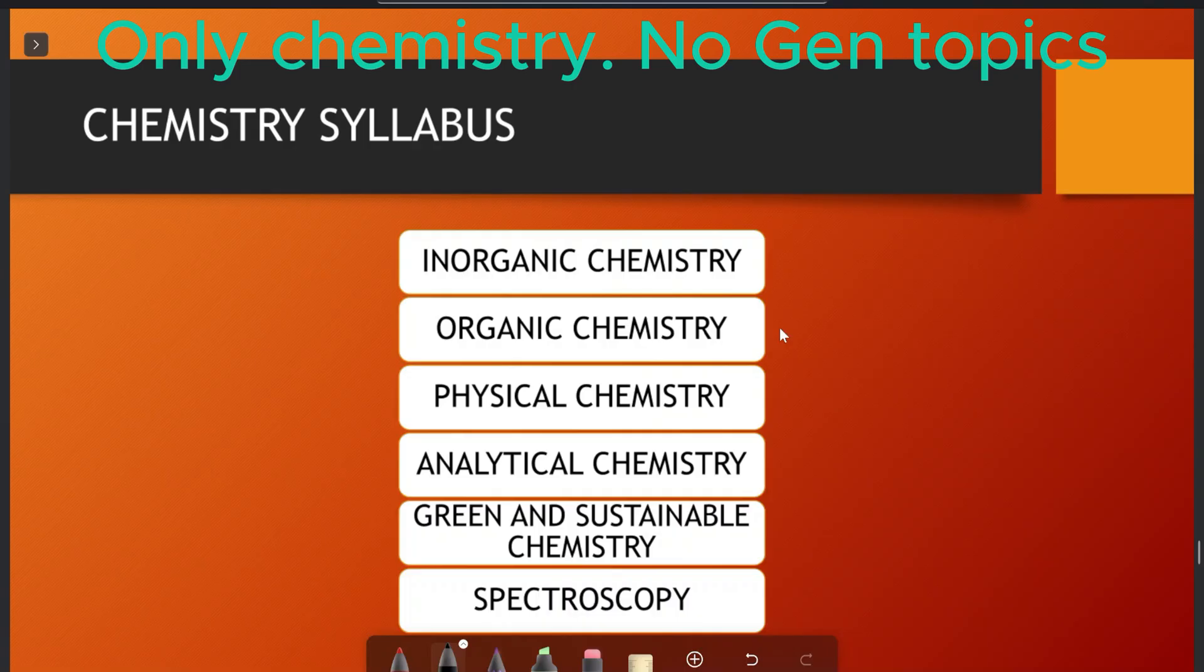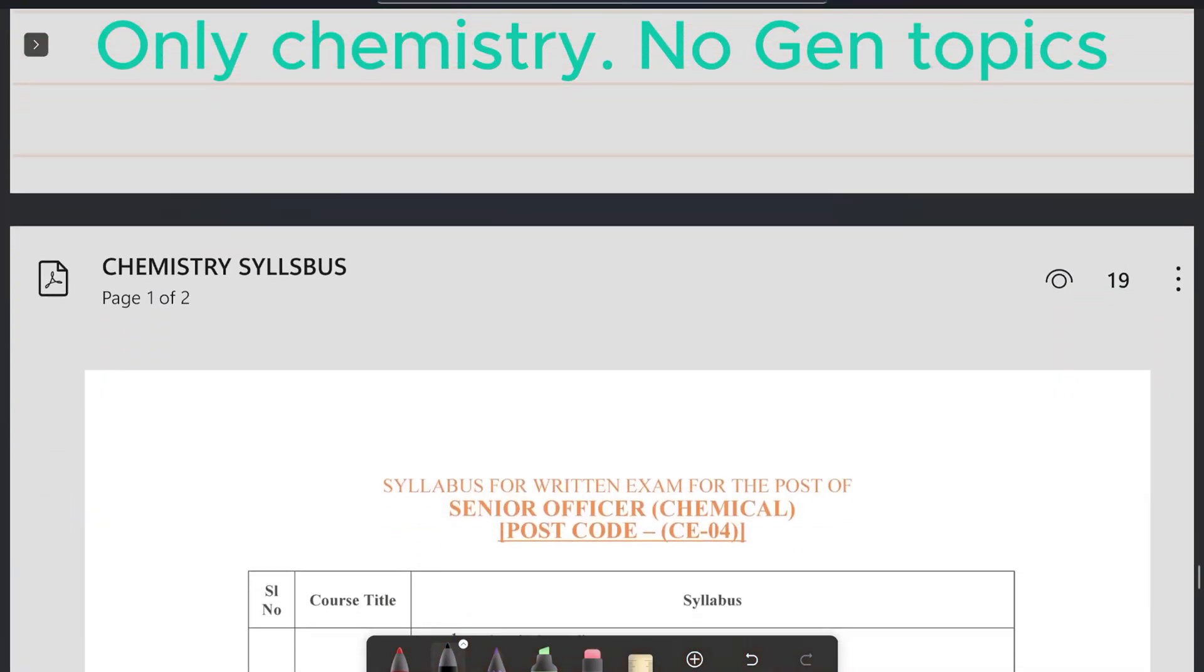Let me tell you about the authentic syllabus. Let's discuss the syllabus in brief, what are the important topics that you have to focus on. Inorganic chemistry, organic chemistry, physical chemistry. These three are the most common topics. Other than that, OIL is also going to ask you about analytical chemistry, green and sustainable chemistry and spectroscopy as well.